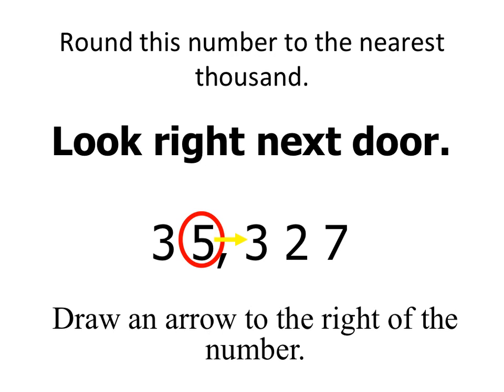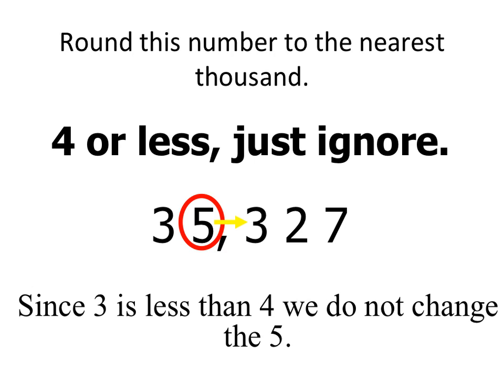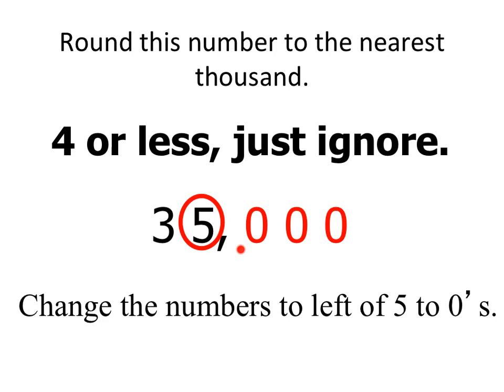Now I'm going to look right next door at the 3. Now I think, 4 or less, just ignore. Since the 3 is less than 4, we're not going to change that 5. But all the rest of the numbers become 0s.